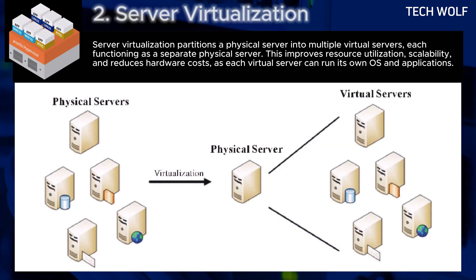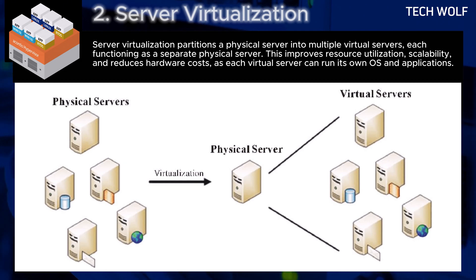The second virtualization type is server virtualization. Server virtualization partitions a physical server into multiple virtual servers, each functioning as a separate physical server. This improves resource utilization and scalability, and reduces hardware costs, as each virtual server can run its own operating system and applications.